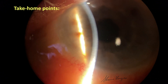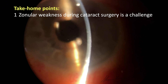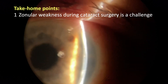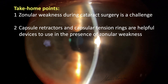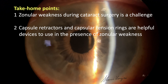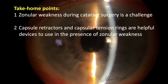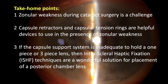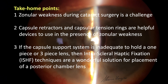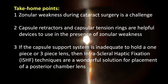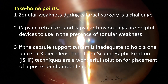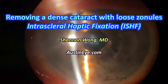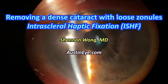In conclusion, the take-home points are: number one, zonular weakness during cataract surgery is a challenge. Number two, capsule retractors and capsule tension rings are very helpful devices to use in the presence of zonular weakness. And finally, number three, if the capsule support system is inadequate to hold a one-piece or a three-piece lens, then intrascleral haptic fixation techniques are a wonderful solution for placement of a posterior chamber lens.